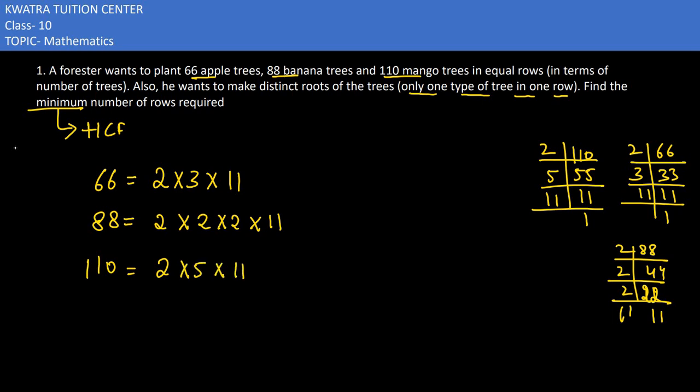Now we have to see which term is common out of the three. I can see 2. Secondly, 11. What will the common factors be? 2 and 11.